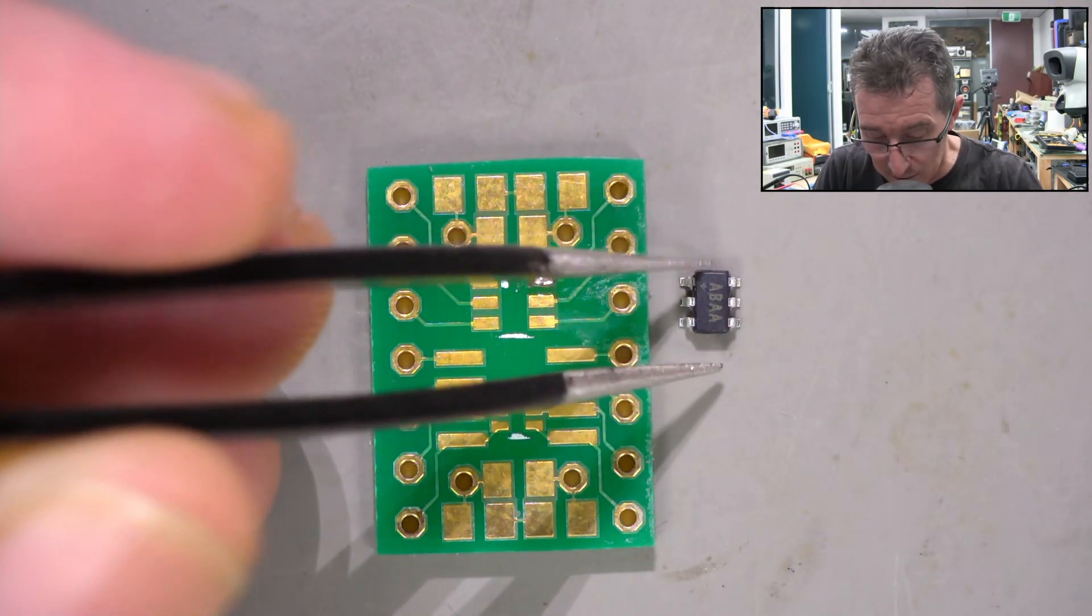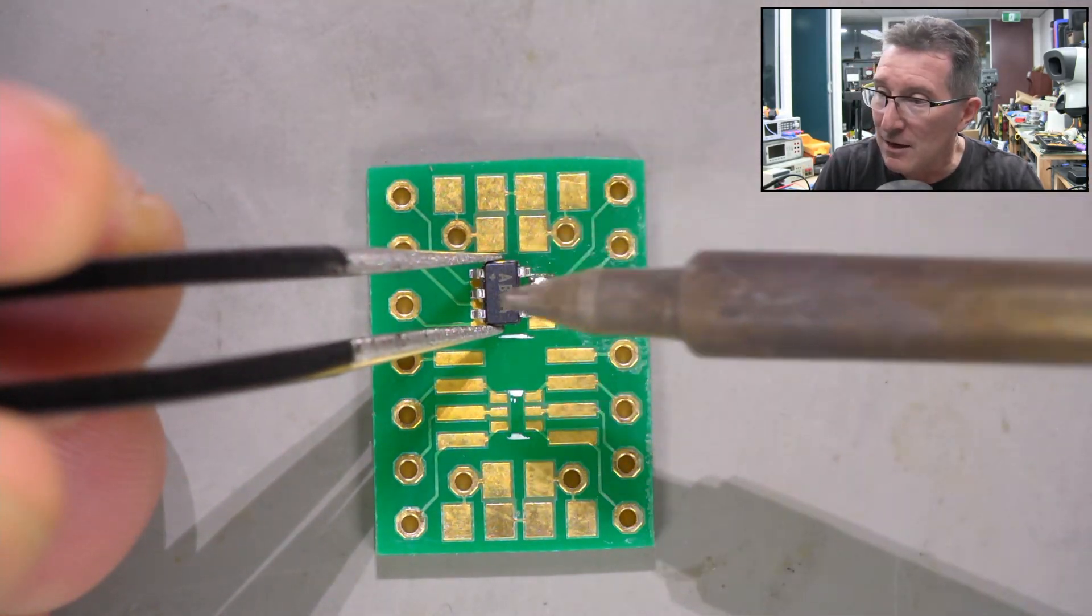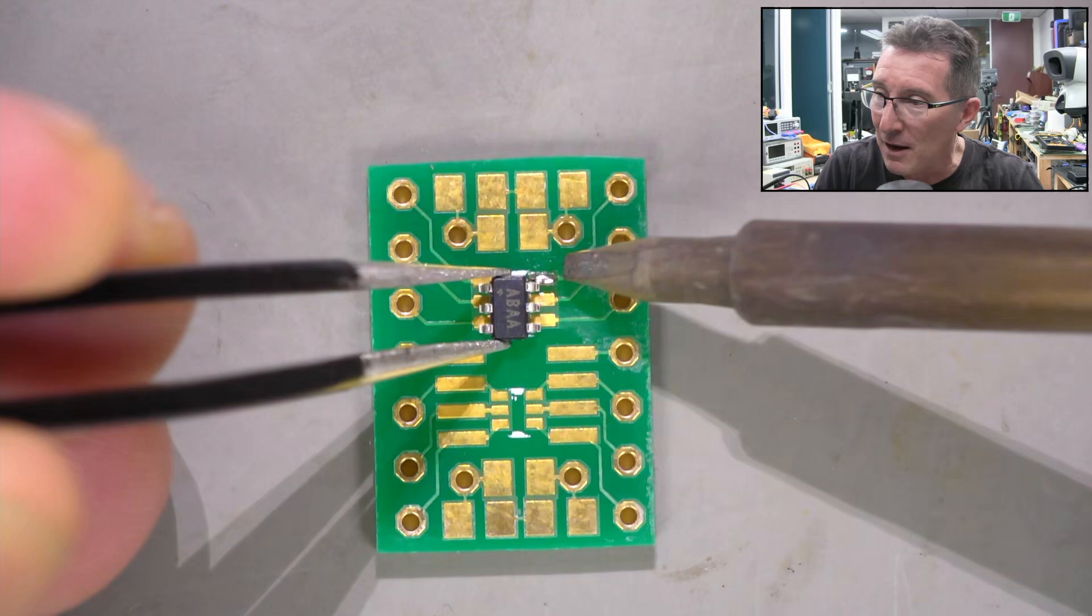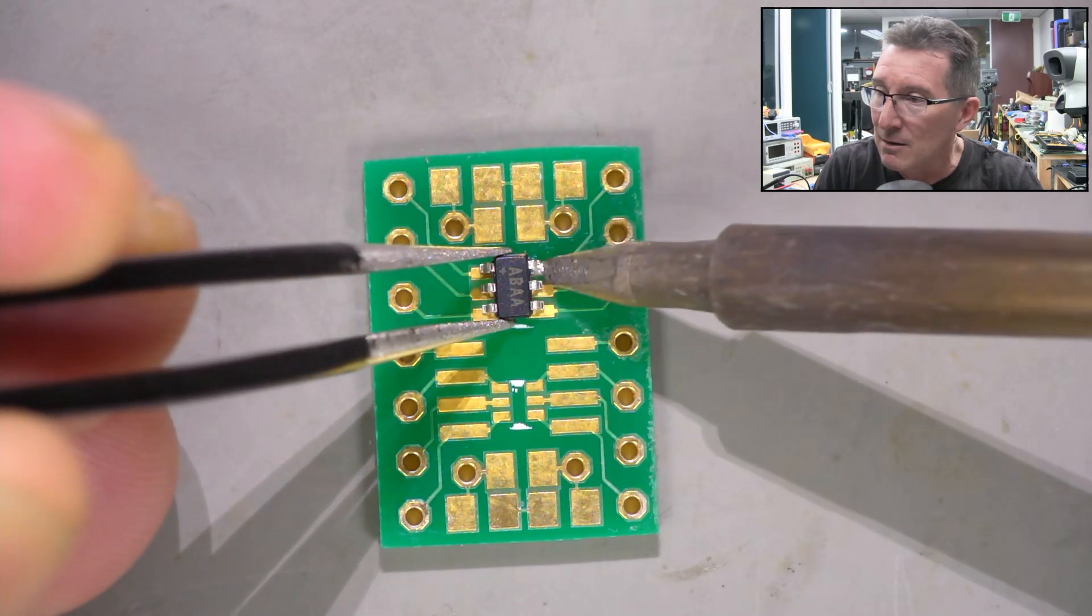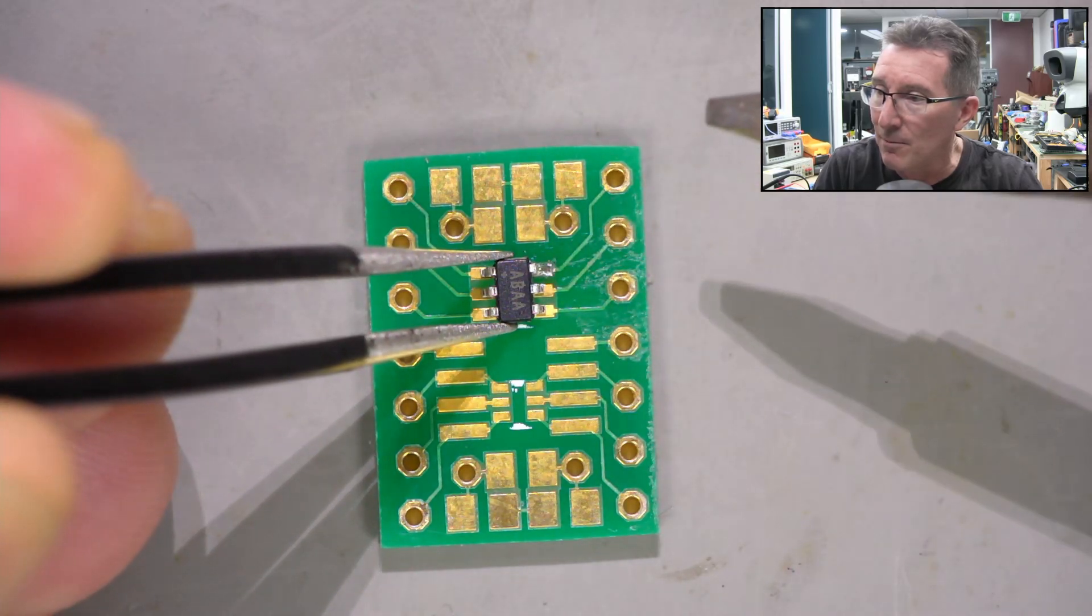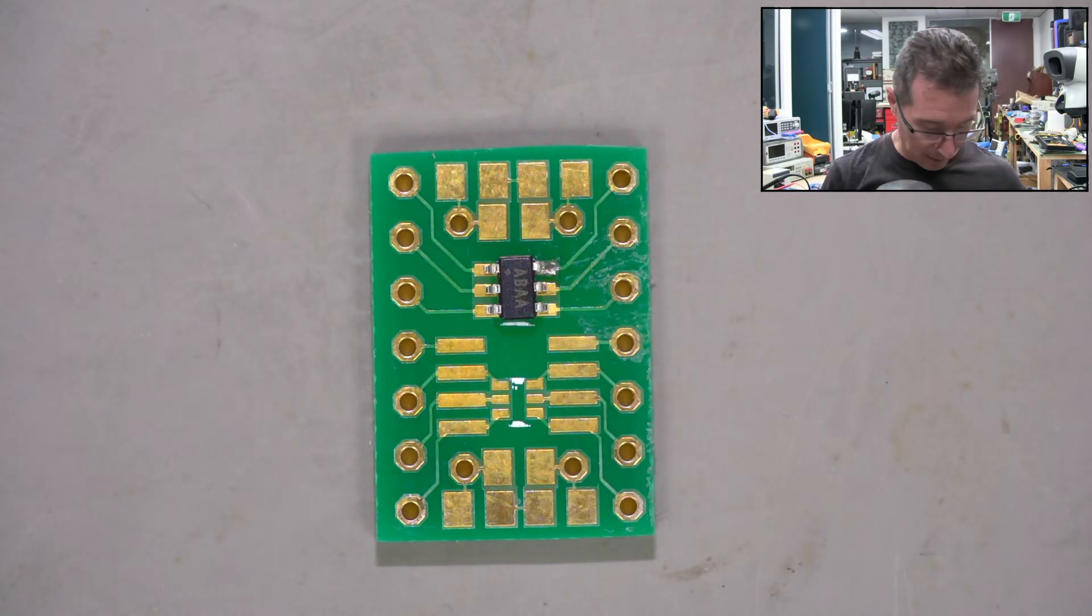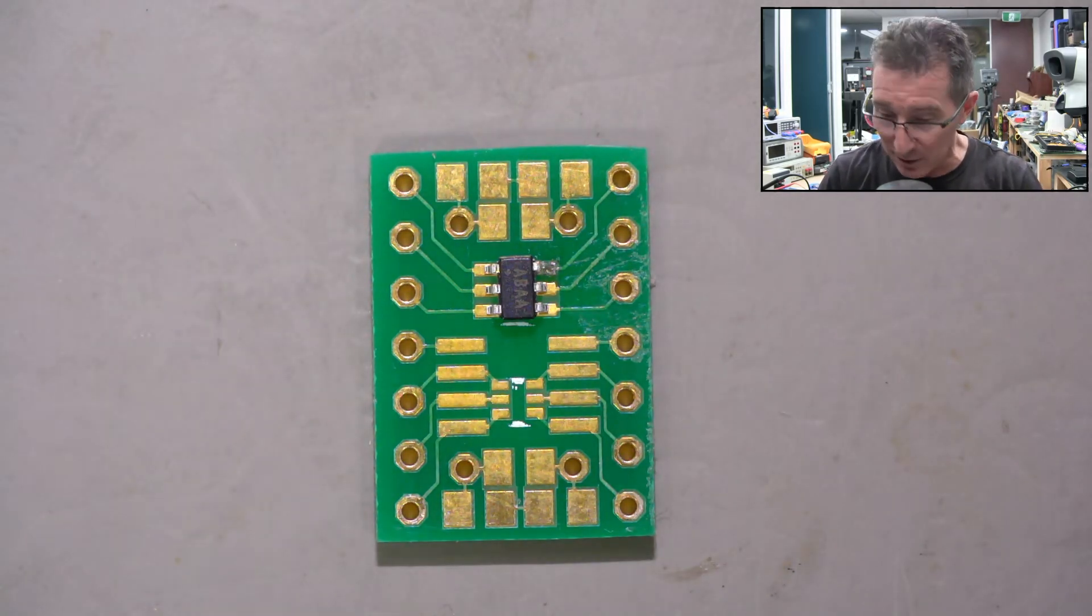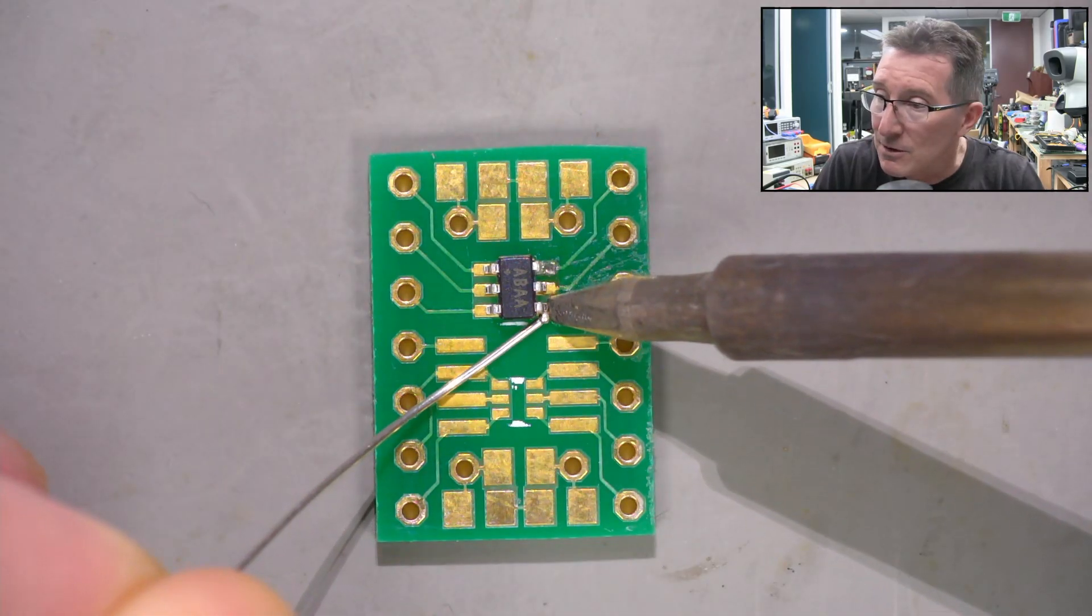So let's move our little chippy over here and we'll tack that down in place, pin one to pin one up there, not that it really matters. There we go. So pin one tacked in place. Well, one pin tacked in place, not actually pin one - it's pin six.